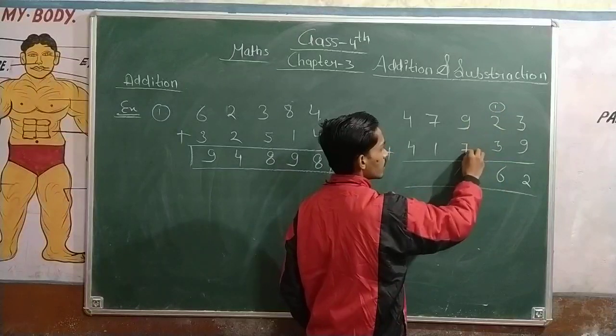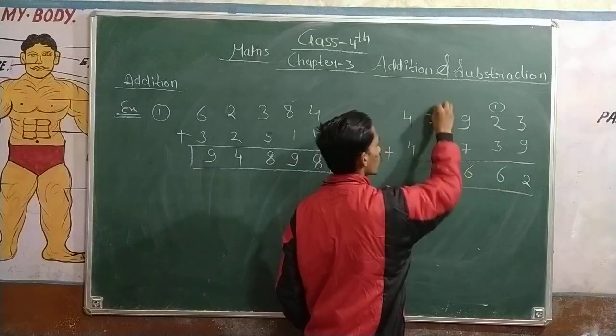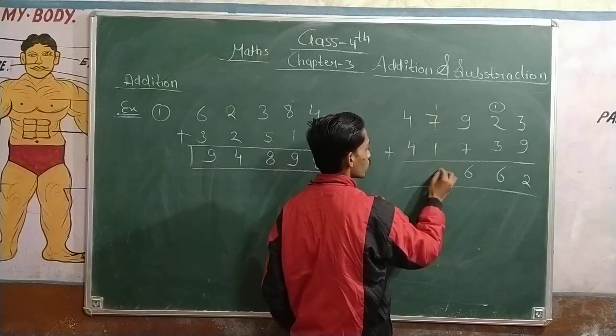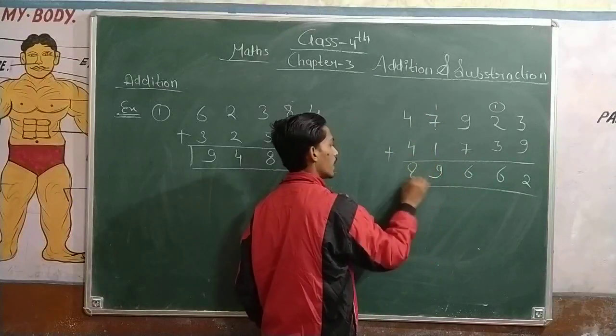9 plus 7, 16. 6, carry 1. 8 plus 1, 9, and 4 plus 4 is 8.